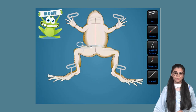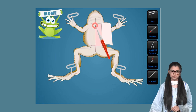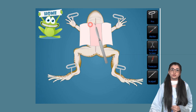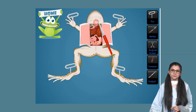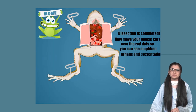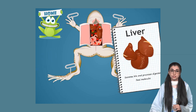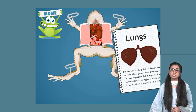Now select the tweezer. A scalpel is needed for the next step. Frogs absorb water through their skin, so they don't have to drink. Select the tweezers again. Dissection is completed. Now move your cursor over the red dots so you can see the amplified organs and view the presentation.